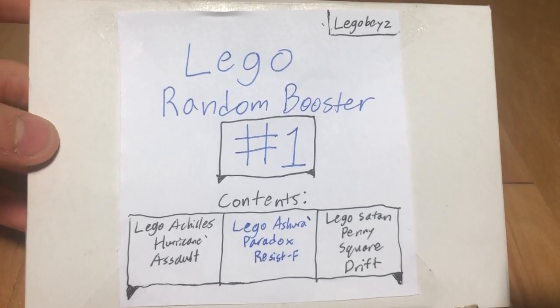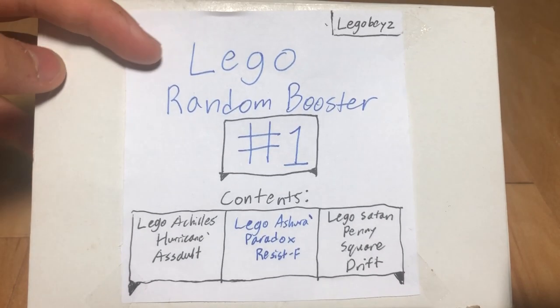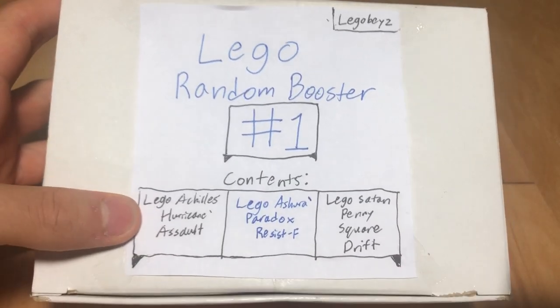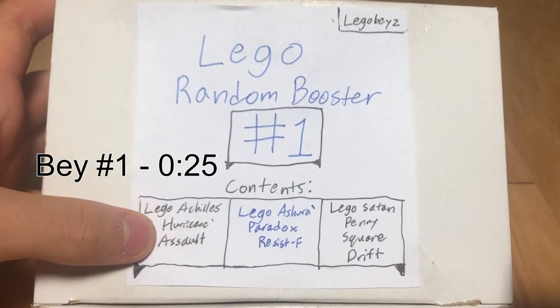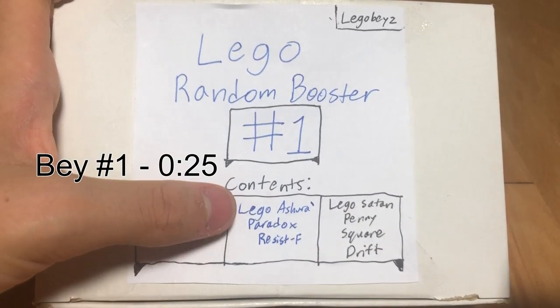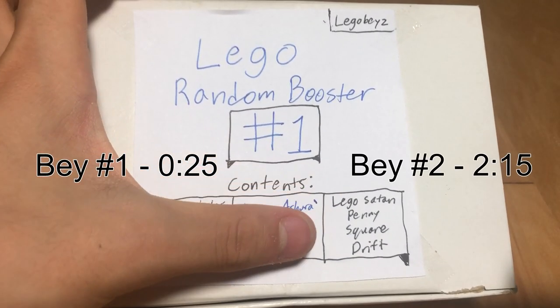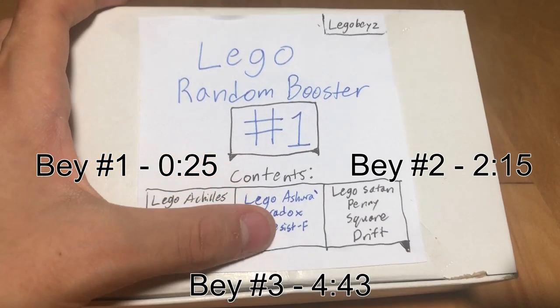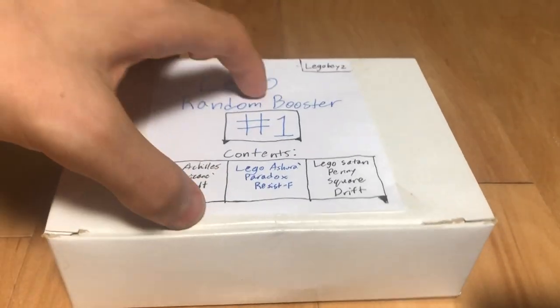All right, so today we're going to be unboxing my LEGO Beys LEGO random booster number one. We have here three possible beys: LEGO Achilles Hurricane Soul, LEGO Satan Penny Square Drift, and of course the prize bay, LEGO Ashura Paradox Resist App. So let's open it up.